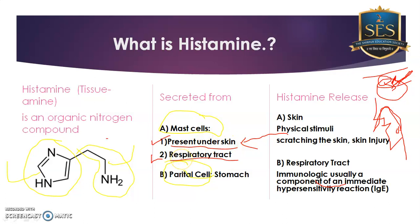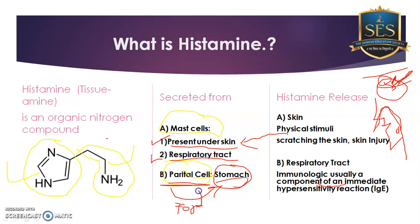To summarize mast cell locations: they are found in the skin and in the respiratory tract. The second cell that releases histamine is the parietal cell, located in the stomach. When you consume food, that food stimulates the parietal cells. In response, parietal cells release histamine, which is responsible for stimulating HCl synthesis, which in turn digests your food.